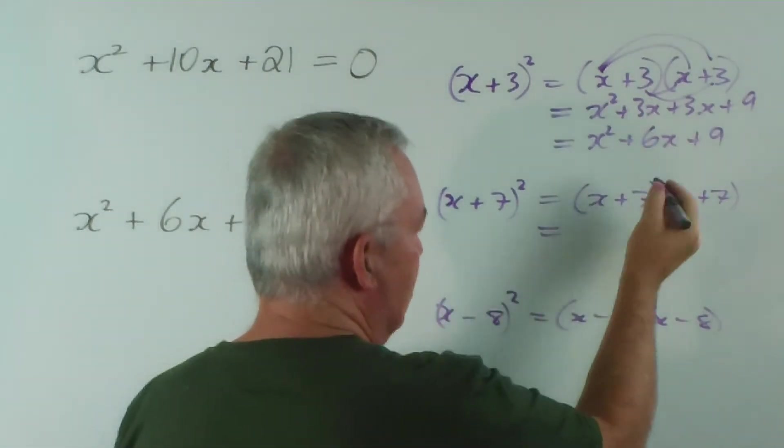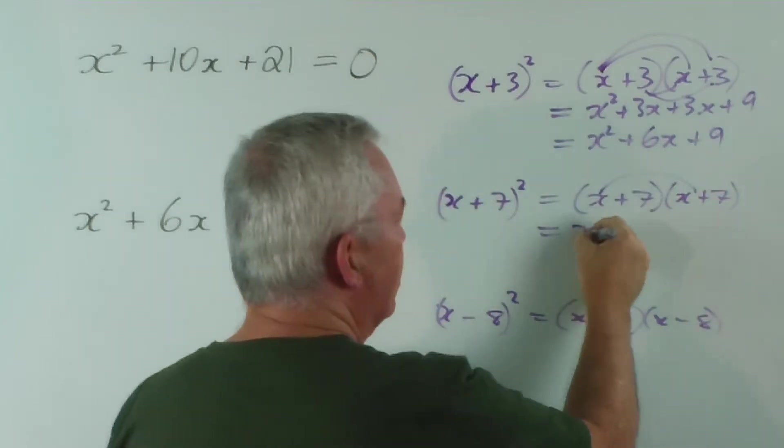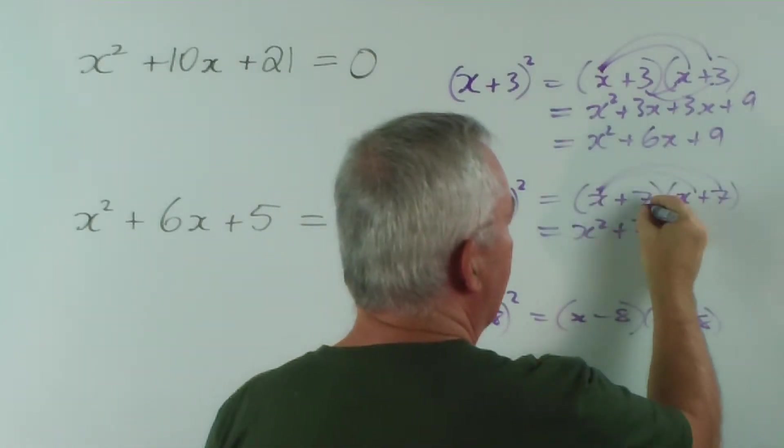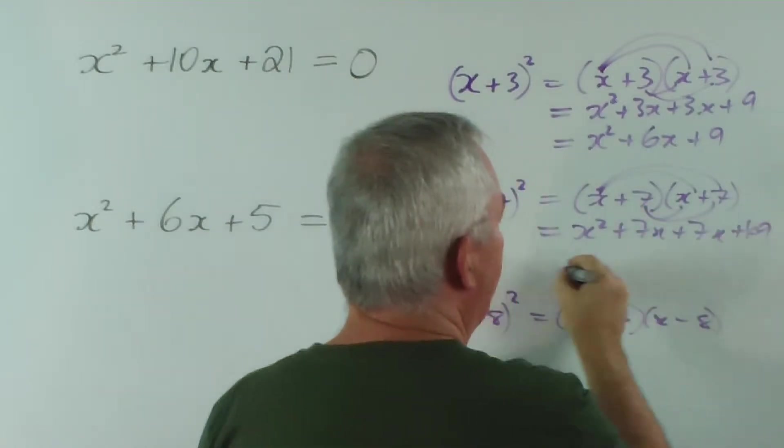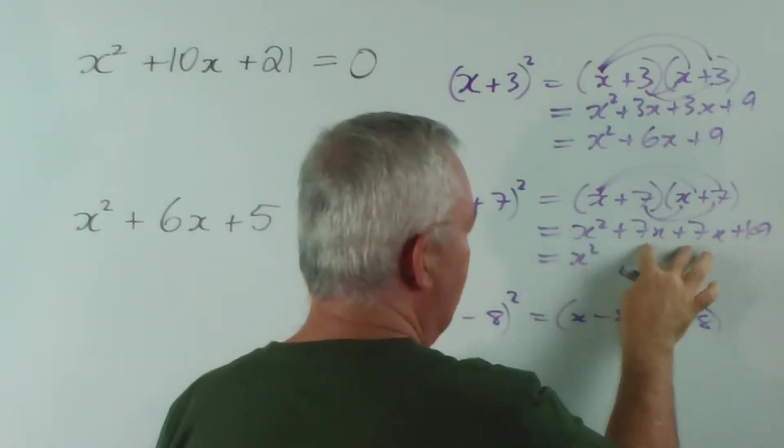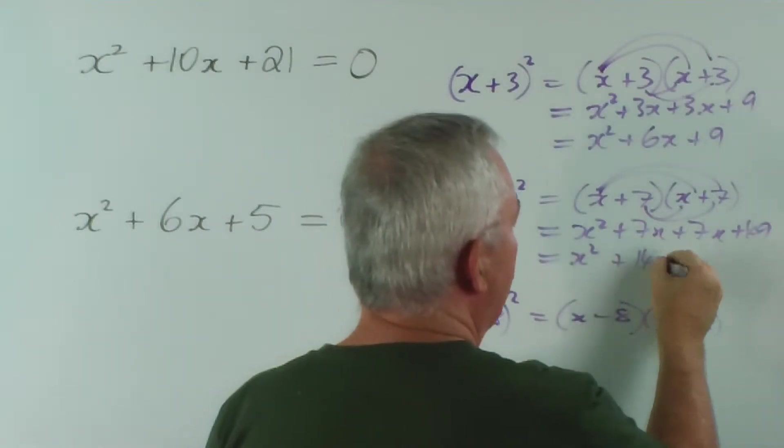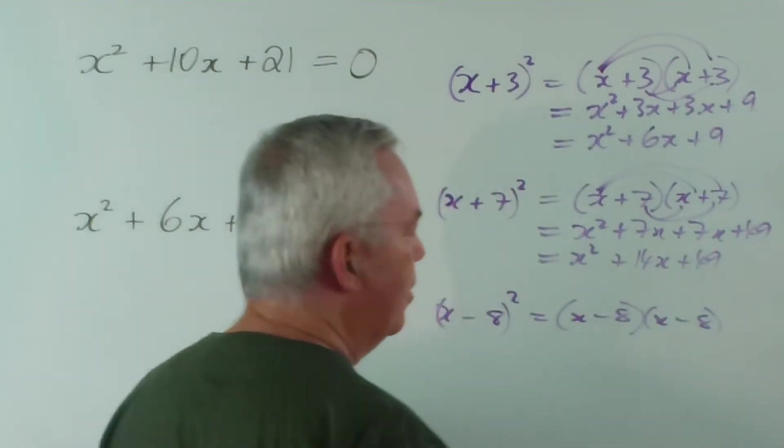Notice this one - we'll speed up a little bit. x times x is x², plus 7x, plus 7x, plus 49. And again, those two in the middle add together, and that's our perfect square.